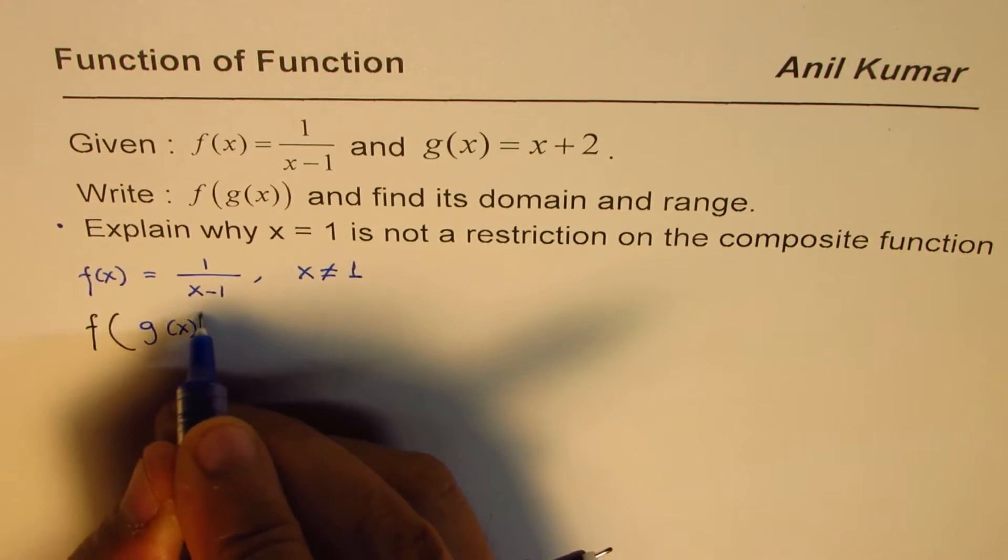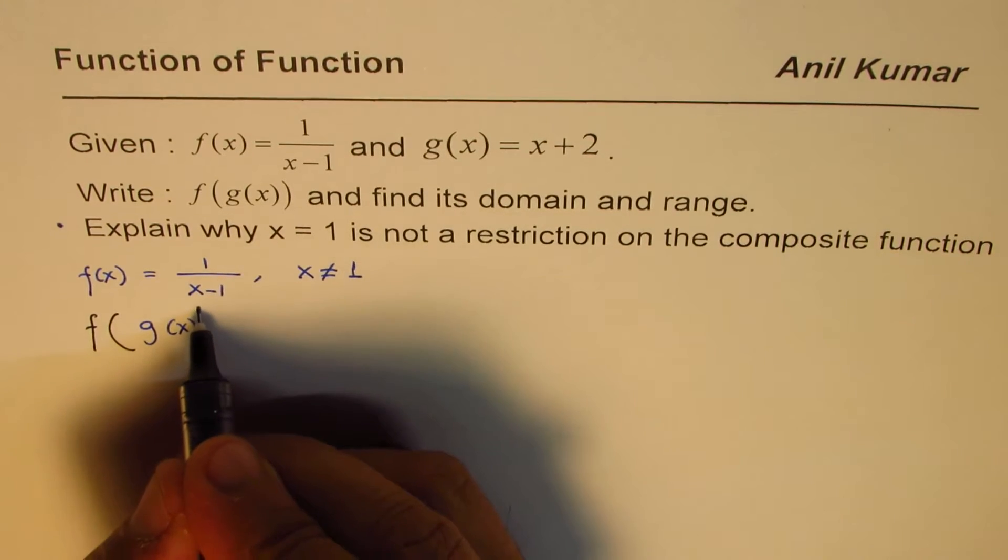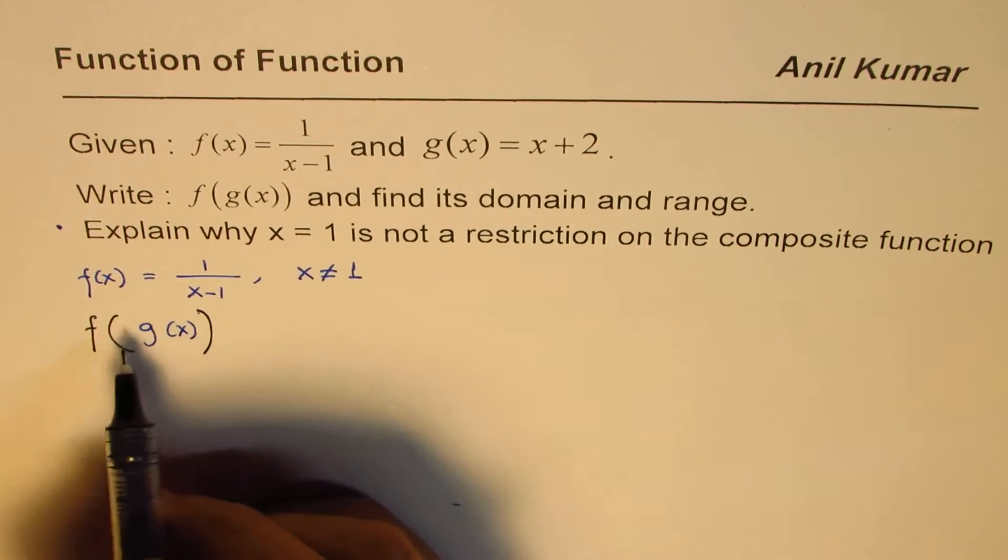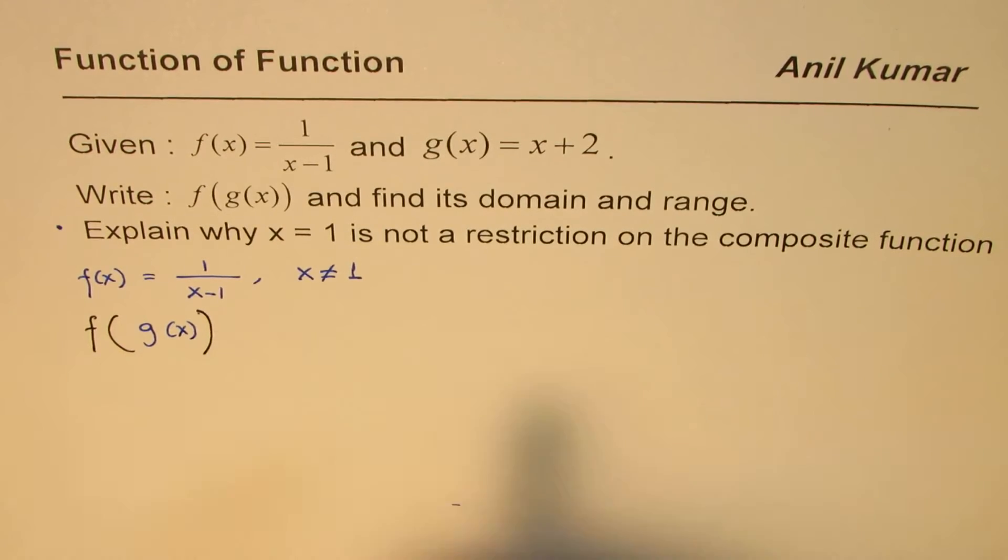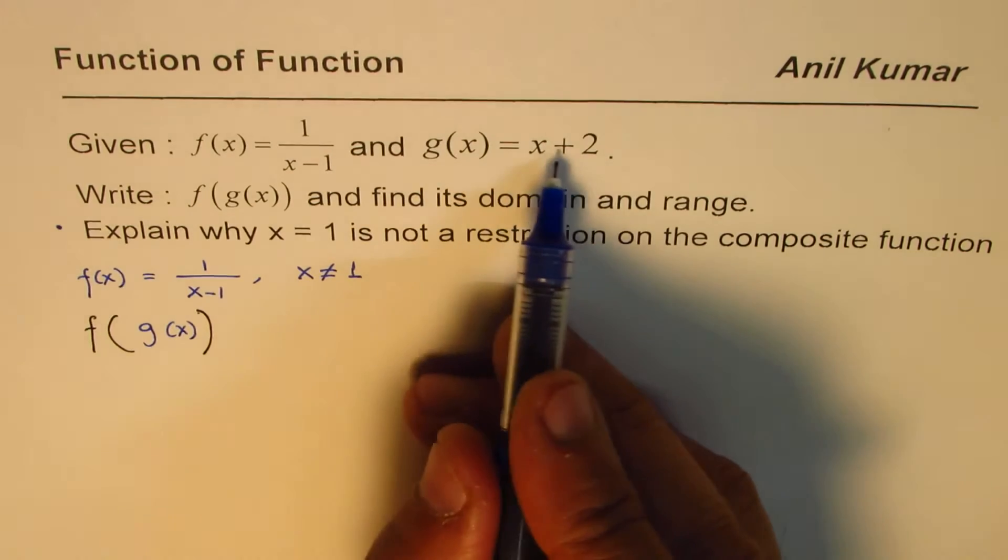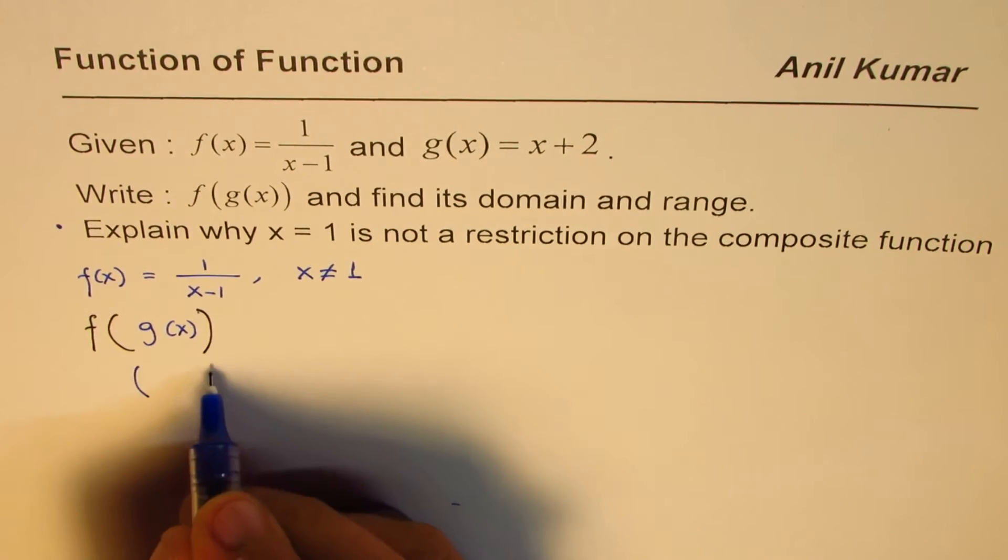It means that we'll replace g(x), which is inside the function, by whatever is given to us for g(x). It's a straight line, so we'll replace this part with x+2. That is g(x).